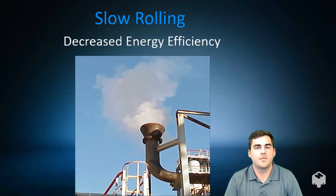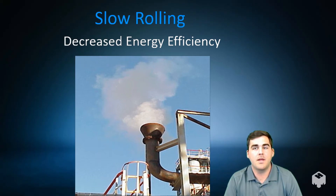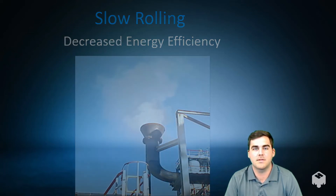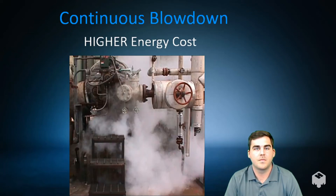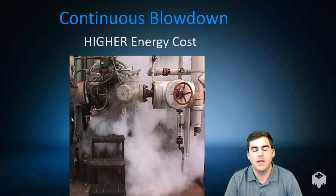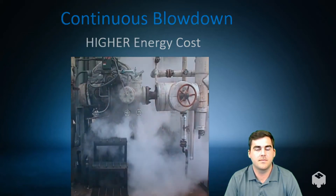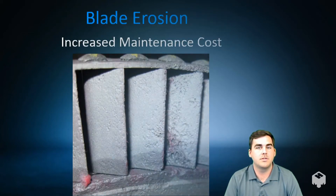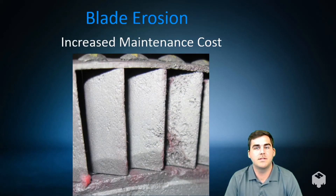Slow rolling is an ineffective practice that is often unnecessary, can be costly, and lead to unnecessary maintenance, and can negatively affect the site's overall steam balance. Continuous blowdown, rather than proper steam trapping, is also very inefficient and can result in safety issues. Blade erosion is a result of insufficient condensate drainage and low-quality steam being supplied to the turbine.